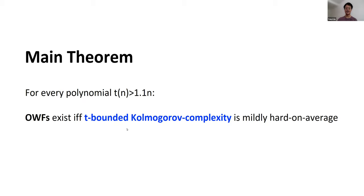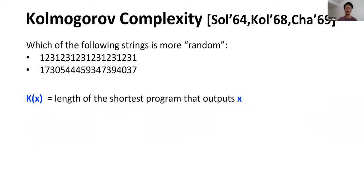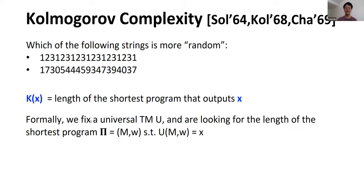Let us introduce the notion of Kolmogorov complexity. Consider two strings: the first is '1 2 3 1 2 3 1 2 3...' and so on, and the second is '1 7 3 something something...' The question is: which string is more random? The notion of Kolmogorov complexity is used to measure the amount of randomness in a fixed string. For any string x, K(x) denotes the length of the shortest program that outputs the string x. The first string can be produced by a very short program — just write a for-loop that prints '1 2 3' again and again.